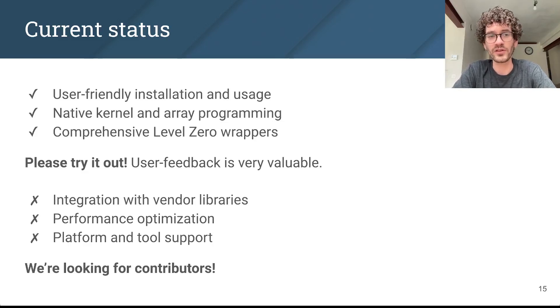That said, there's still a couple of shortcomings. For example, we don't yet integrate with libraries like oneBLAS or oneDNN, which means that some fairly essential operations like matrix multiplications are slow. In fact, oneAPI.jl hasn't been optimized for performance yet. We're certainly still focusing on implementing missing functionality. And for that, we're looking for people to help us out. So if you're interested, please get in touch.